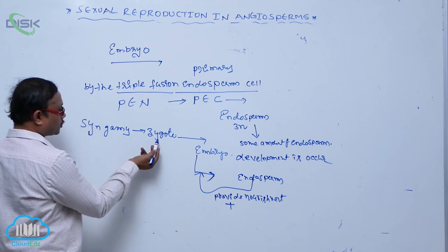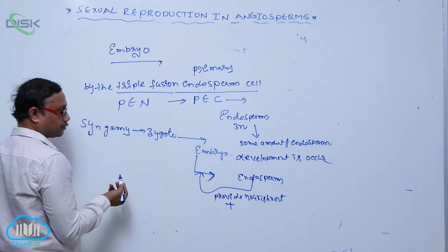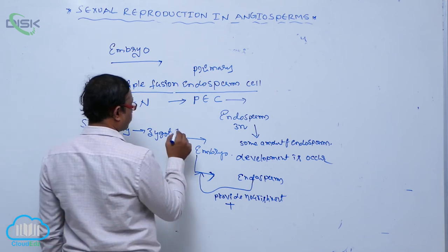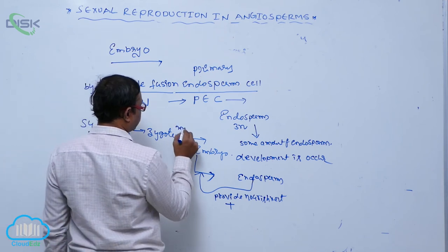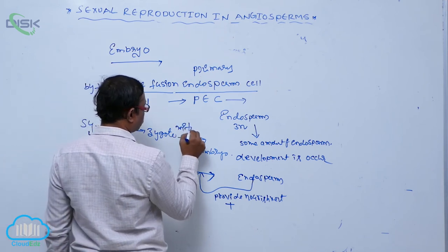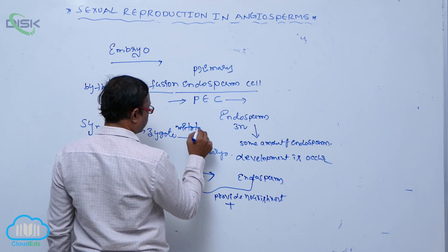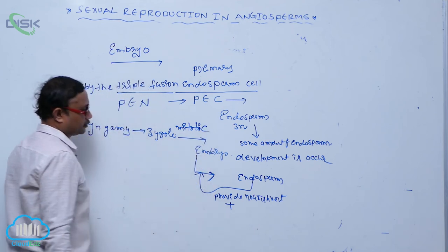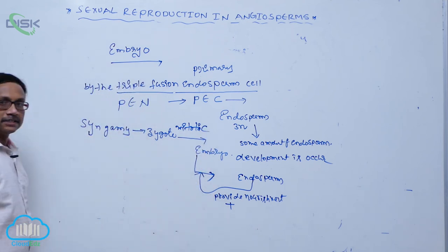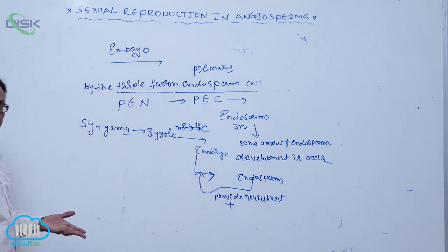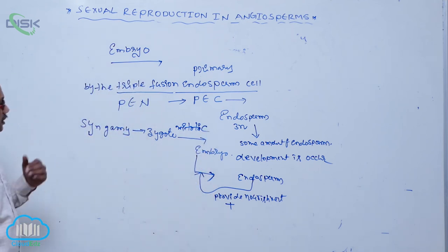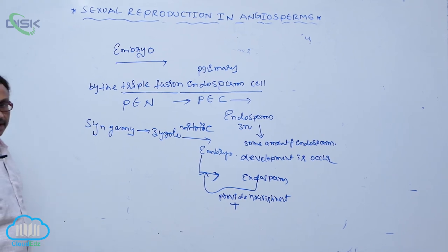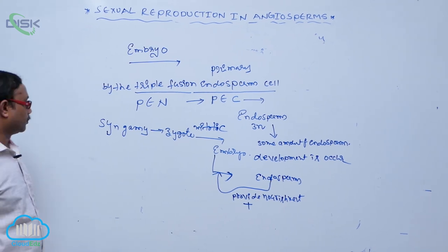The embryo is produced from the zygote by mitotic division. Several types of cell division occur in the zygote, and then the zygote is converted into that embryo.